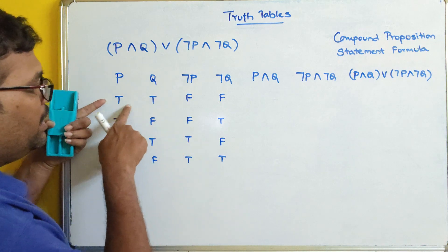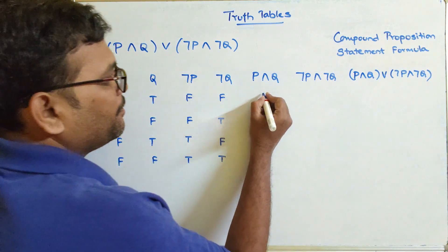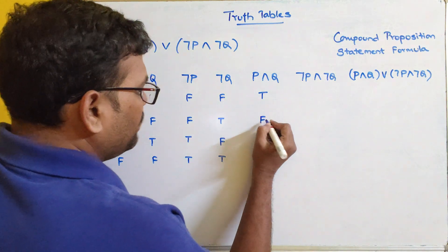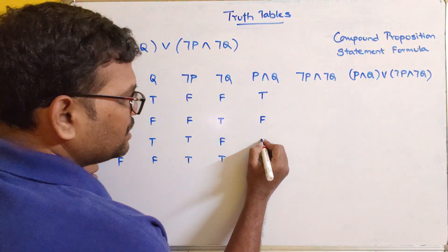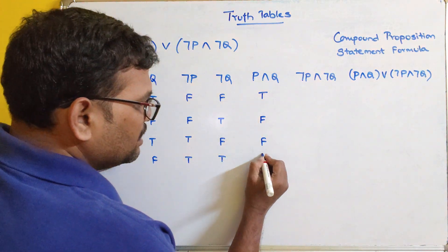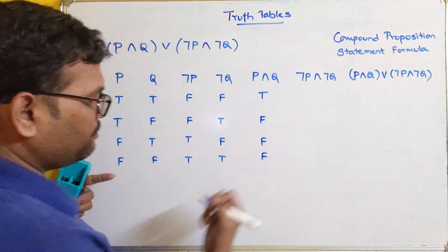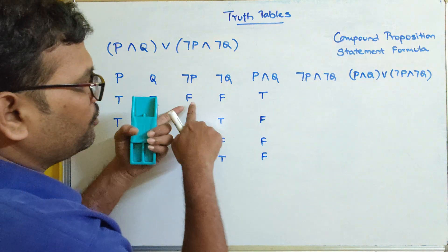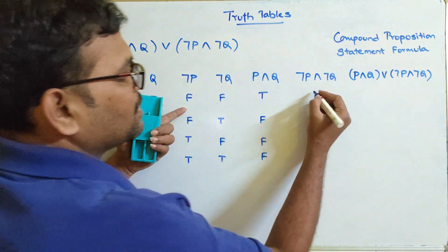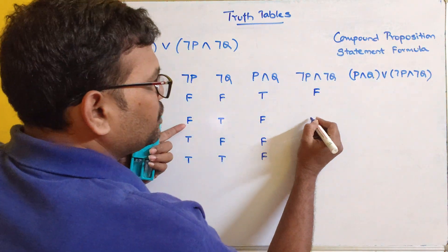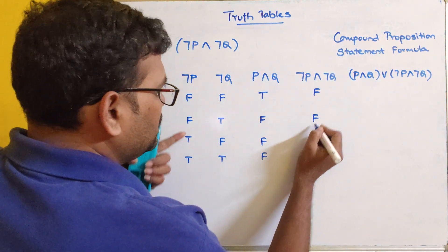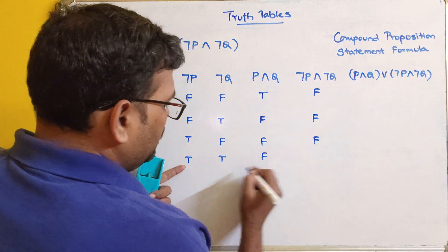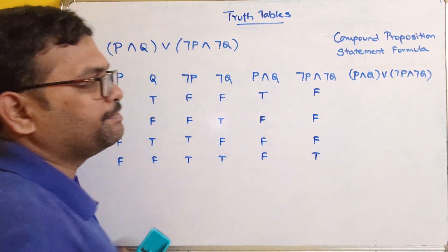¬P ∧ ¬Q: F∧F = F, F∧T = F, T∧F = F, T∧T = T. So the ¬P ∧ ¬Q column gives: F, F, F, T.